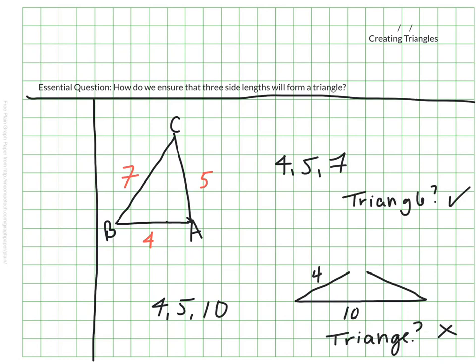So my first example made a nice triangle, no worries. The second one did not make a triangle.